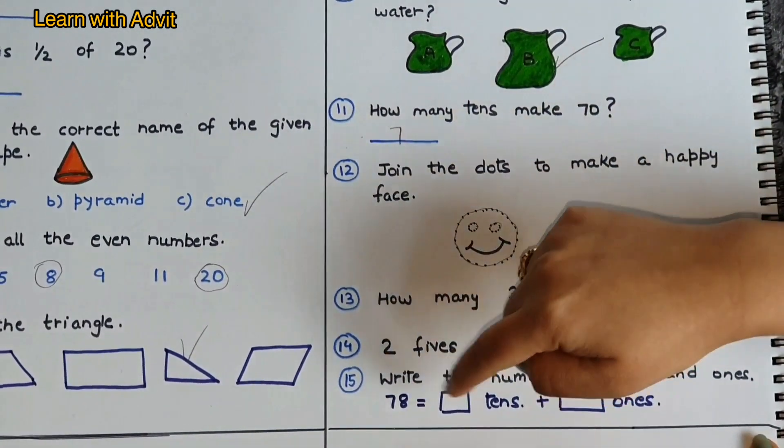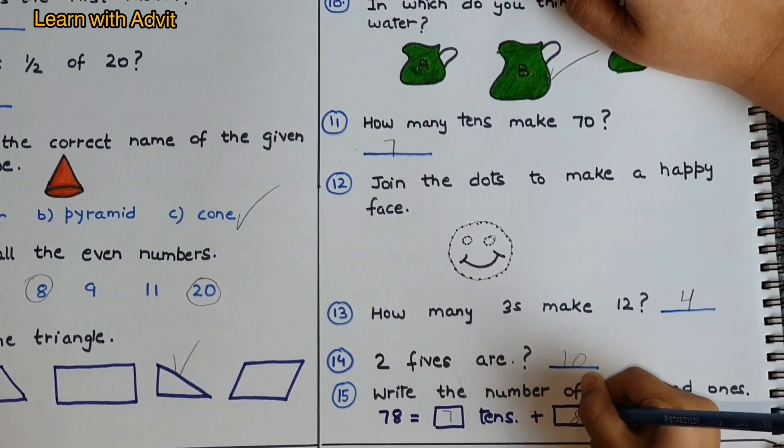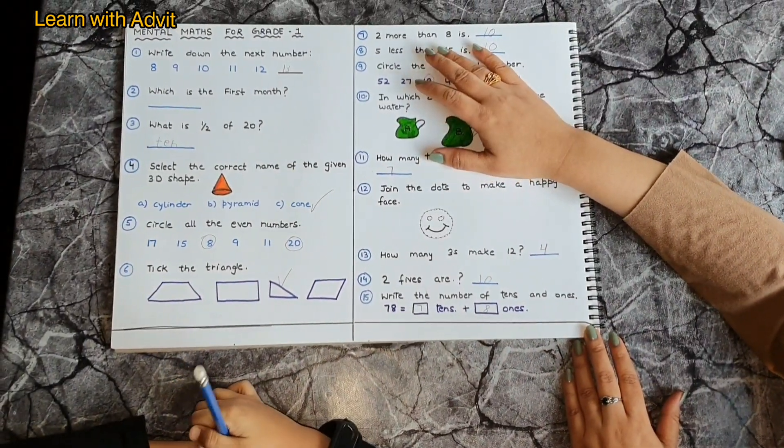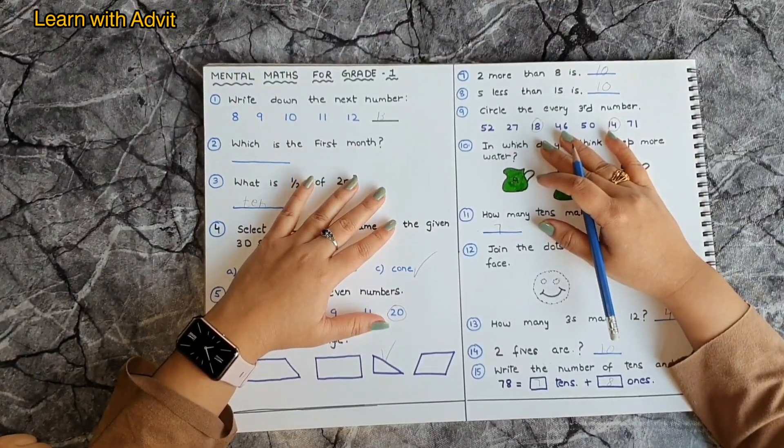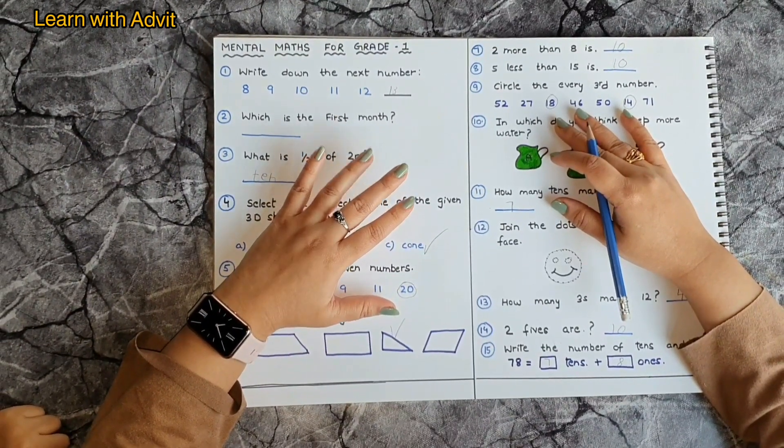Write the number of tens and ones in seventy-eight: seven tens, eight ones, very good. You enjoyed these mental maths and GK worksheet, very good. I hope you like this worksheet.